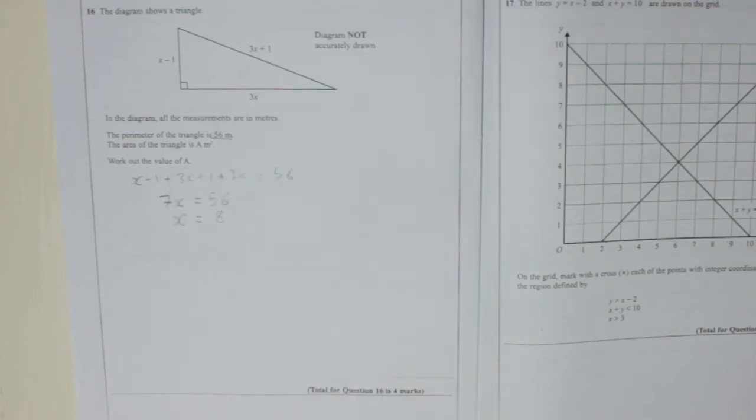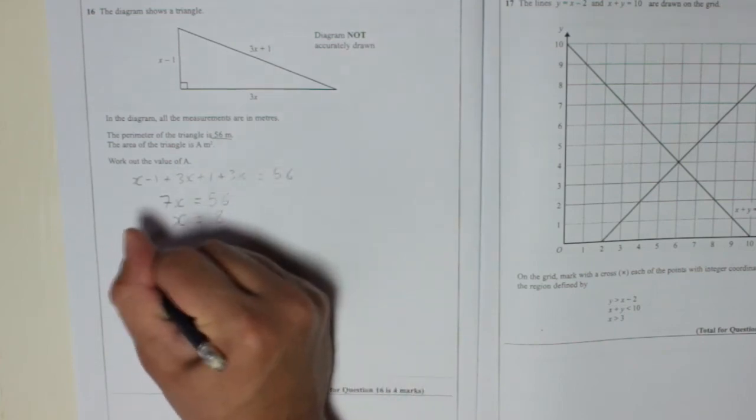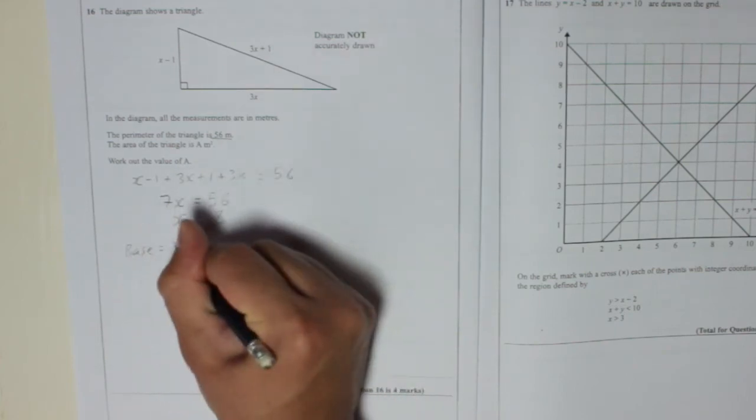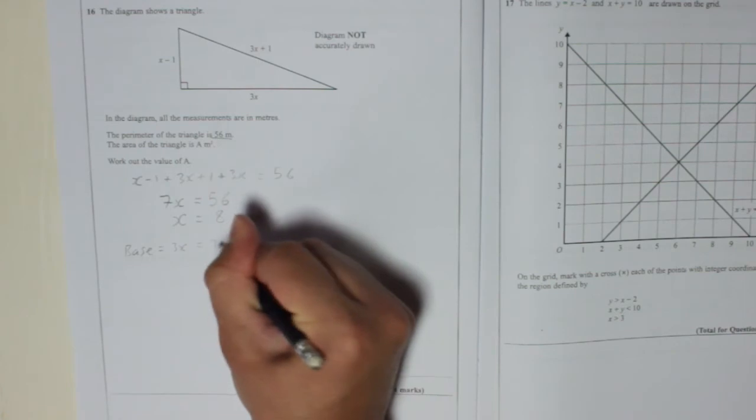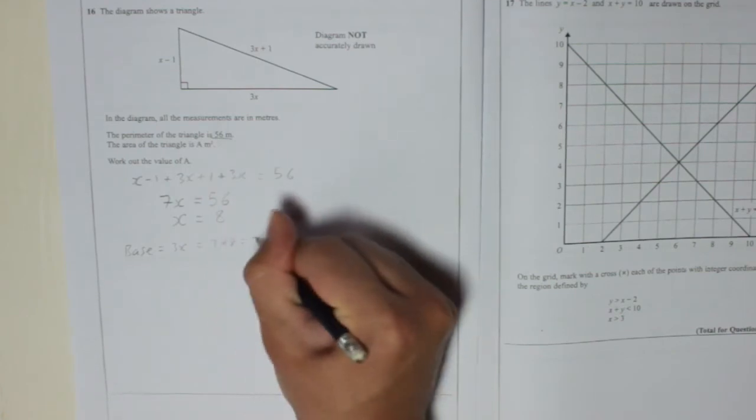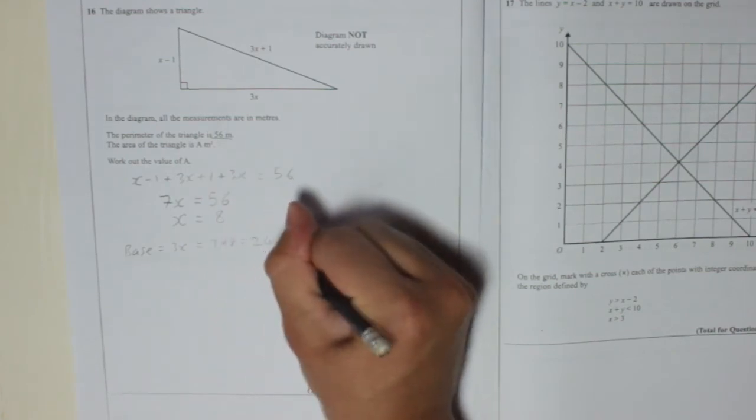So now we know that x is 8, we know that the base is 3x, which is 3 times 8, which is 24 metres.